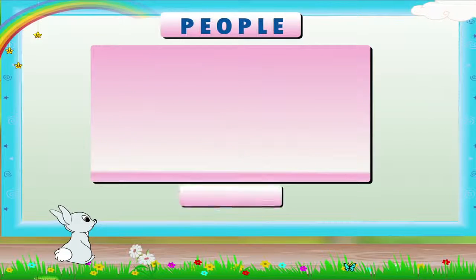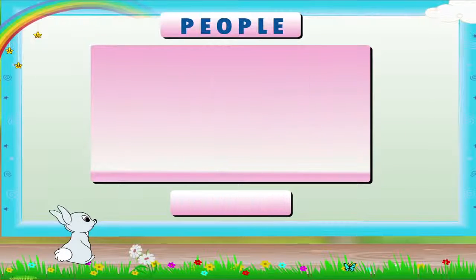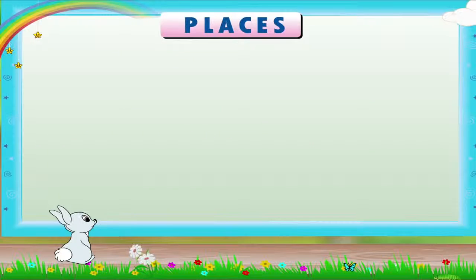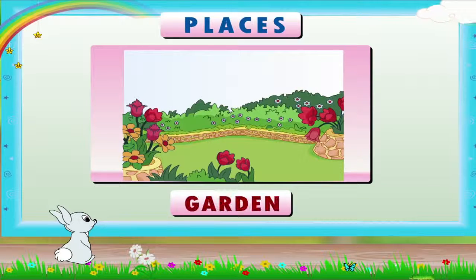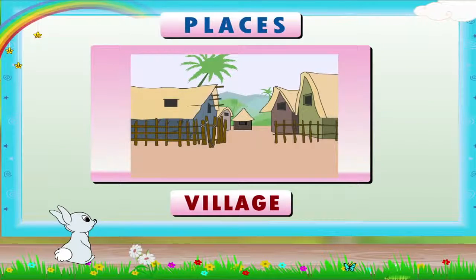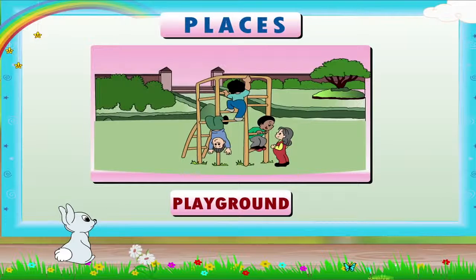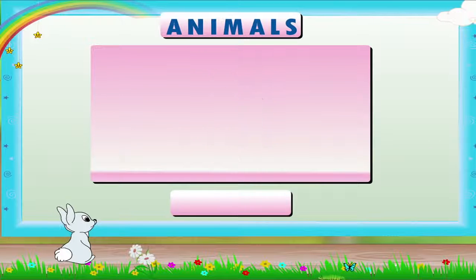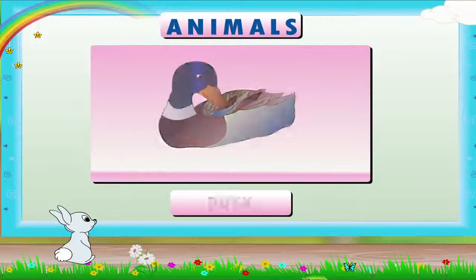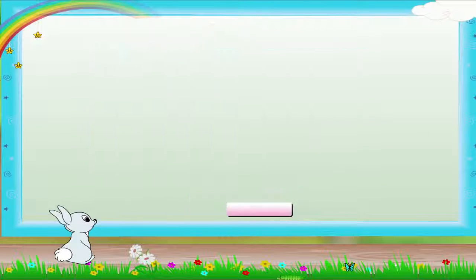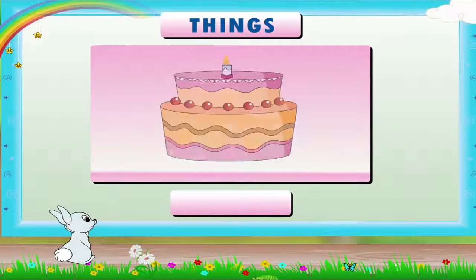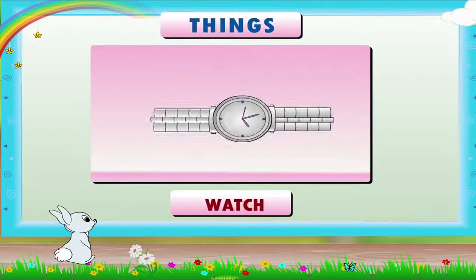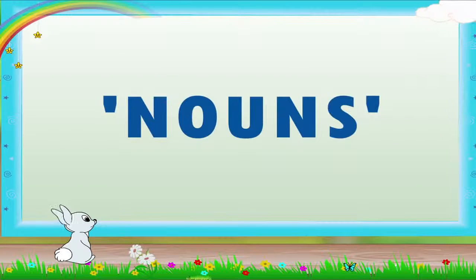So, people like teacher, boy, girl; places like garden, village, playground; animals like cat, duck, dog; and things like cake, needle, watch are nouns.